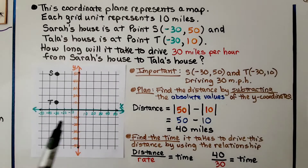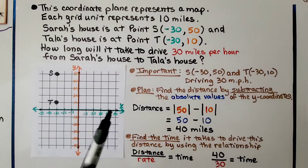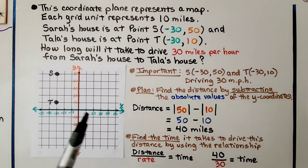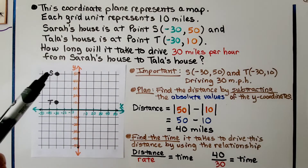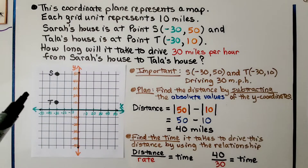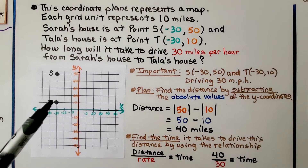This coordinate plane represents a map and each grid unit represents 10 miles. We can see that on the x and y axis they're 10 apart. Sarah's house is at point S, which has an x-value of negative 30 and a y-value of 50. And Tala's house is at point T, which is negative 30 for x and 10 for y.